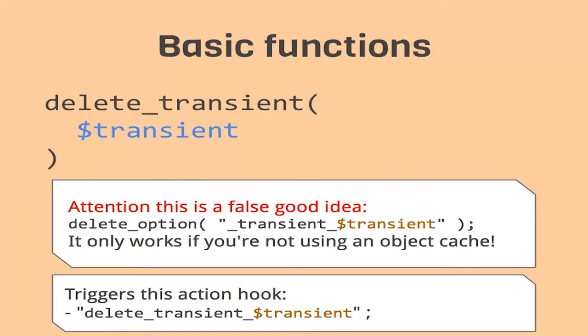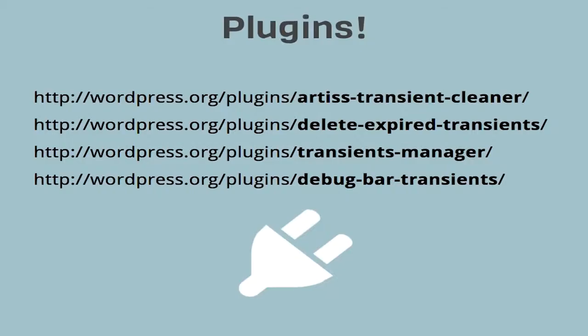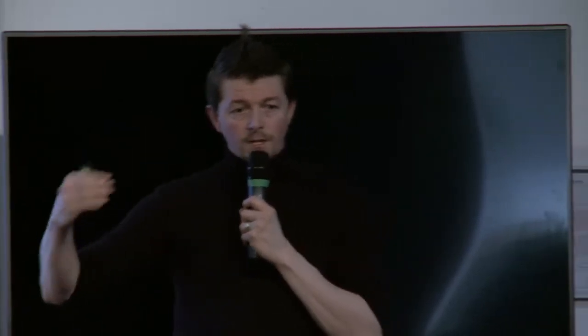This script will also trigger the previous hooks I talked about. A little help for you: I propose four plugins to clean your transients from your backend. You can delete them with one of them. The Transient Manager is different - you can find all your transients set in your database, see the next expiration, etc. And if you're using the Debug Bar plugin, you can find for each page how many transients have been loaded.